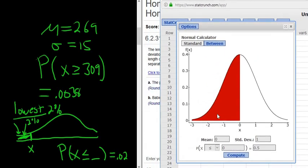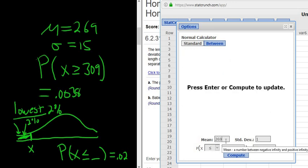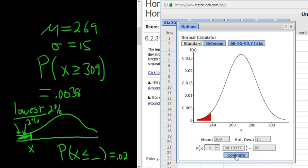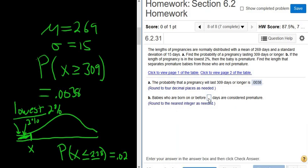OK, and the mean here is 269. Standard deviation is 15. And we said lowest 2%, so less than or equal to, and then you put the 2% in the second box. Hit Compute, and there's the answer, 238. So we go back over here and enter 238.